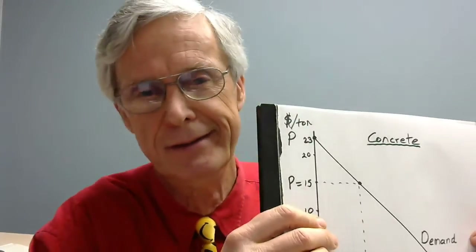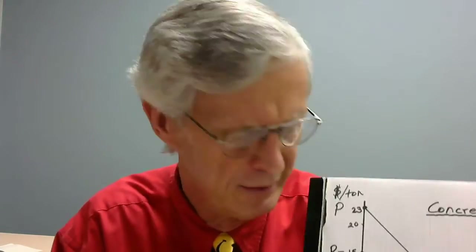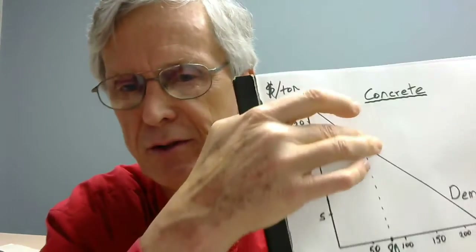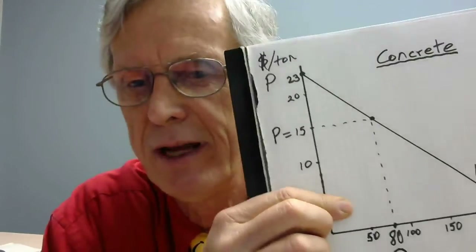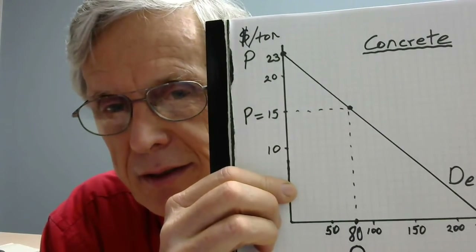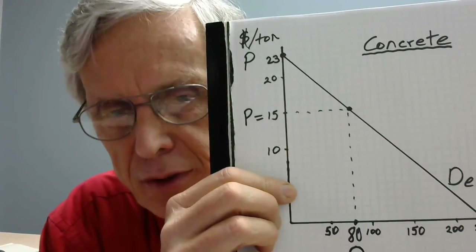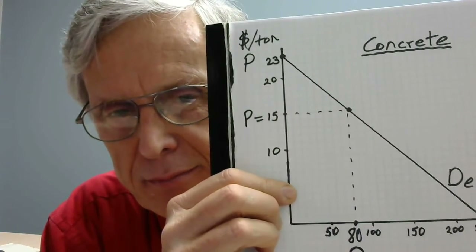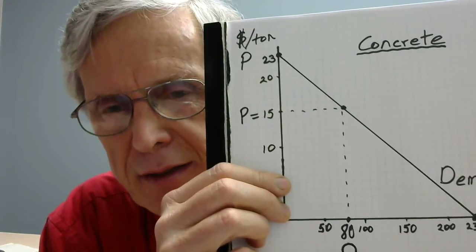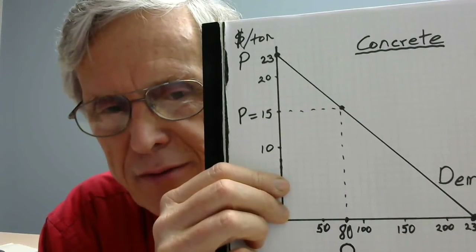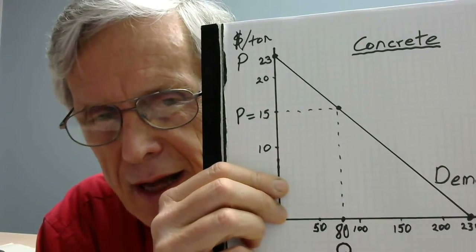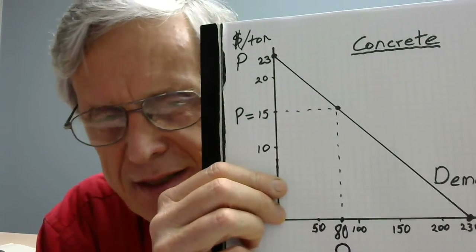Every single point on that demand line indicates the incremental value of the good. Subtracting the price from that value gives the buyer's gain from trade. That dot up on the demand line indicates that the incremental value — the addition to total benefit — of the 80th unit is $15 per ton. Compared to selling 79, when 80 are sold total benefits to society increase by $15. The points on the demand line indicate incremental value.